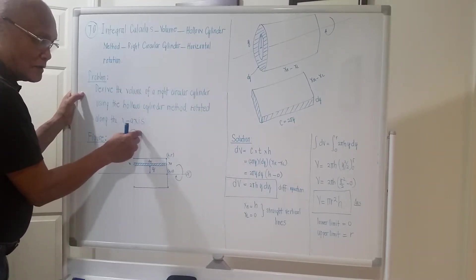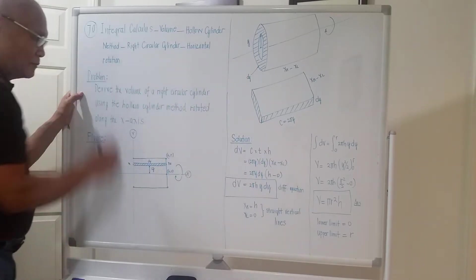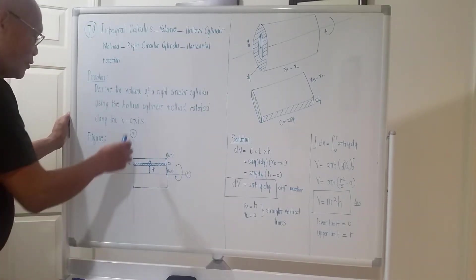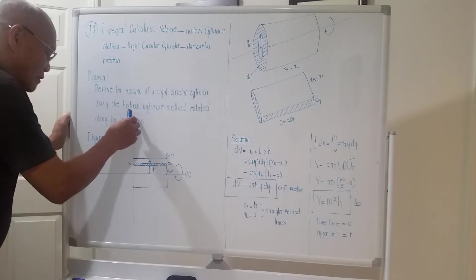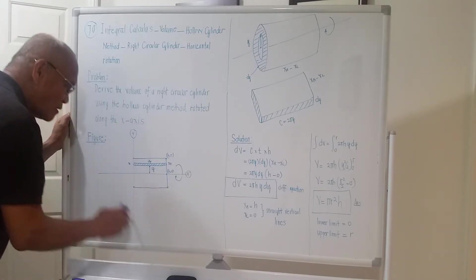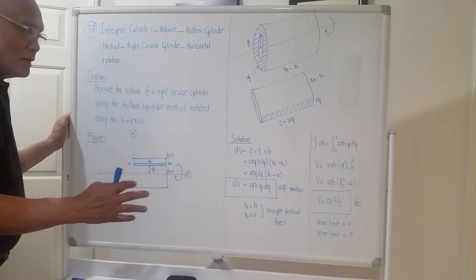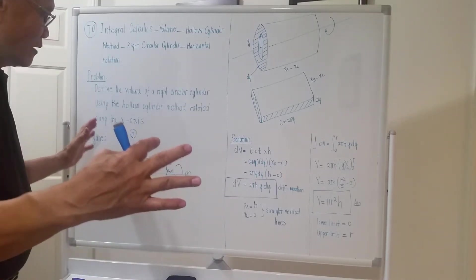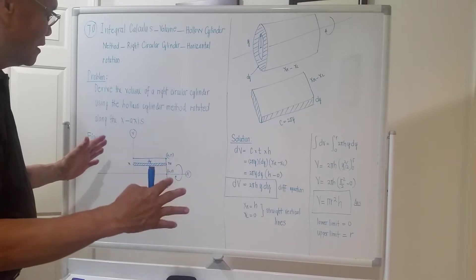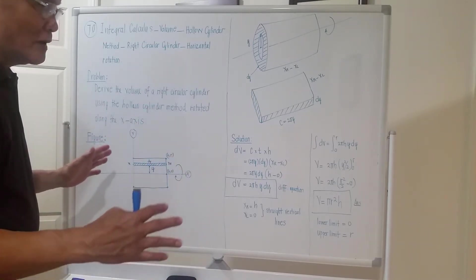That means horizontal rotation. To bring out the figure, we draw the Cartesian coordinate system — the y-axis and x-axis. The frontal view of the right circular cylinder shows just straight lines, but if you try to see the isometric view it will be a different thing.